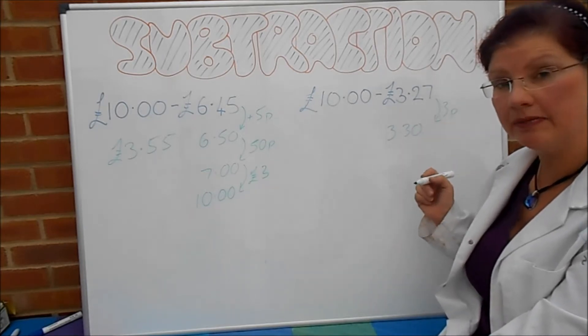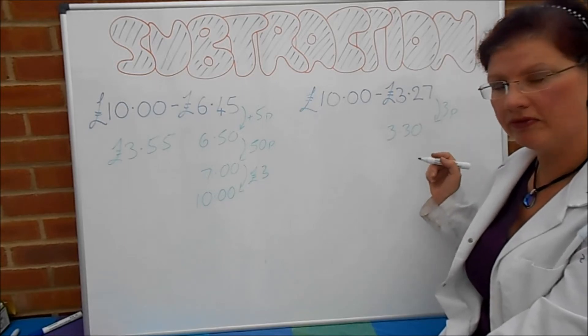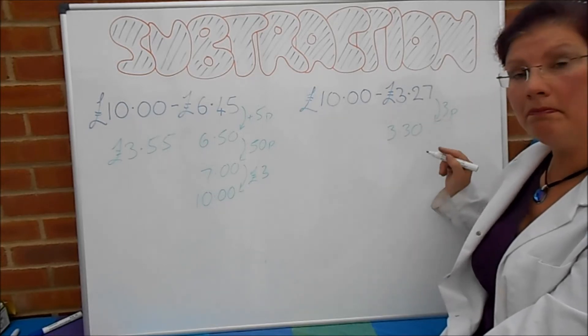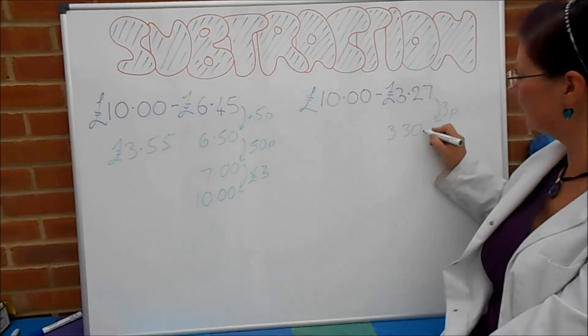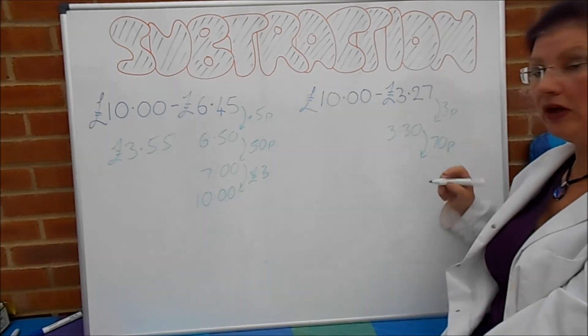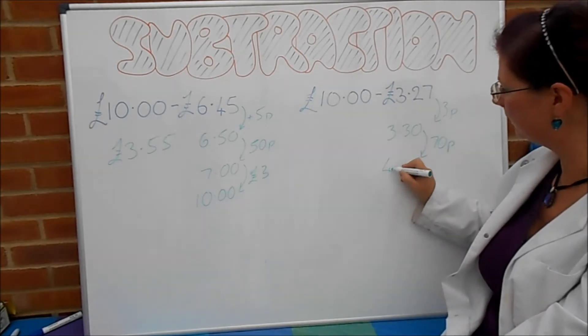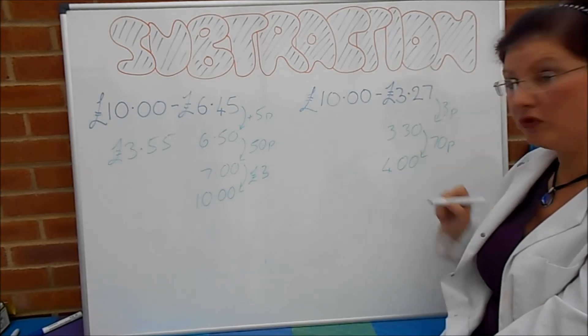Now you could add 10p and 10p if you wanted, that'll take you up to 50p, or we can do it in one big jump and take us up to the next pound, which I think I'm going to do. I'm going to add on 70p all in one go, which brings us up to £4.00.